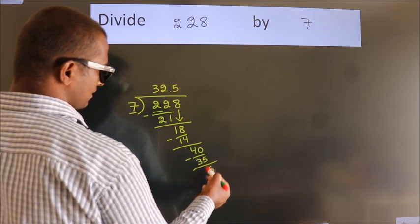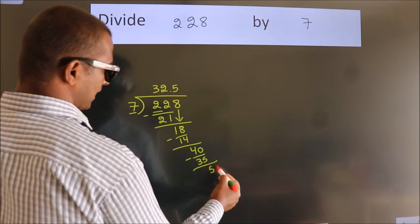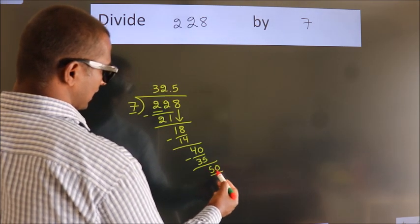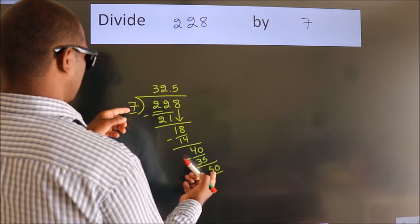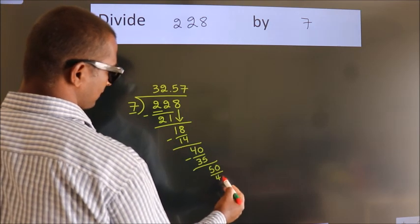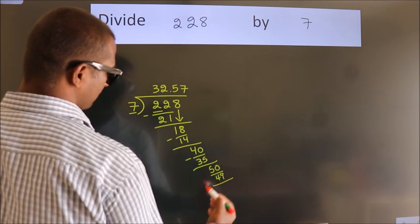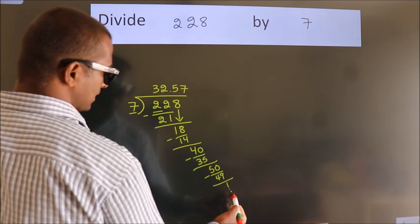After this, we already have the decimal. So directly take 0. So 50. A number close to 50 in 7 table is 7 sevens, 49. Now we subtract. We get 1. And the division continues.